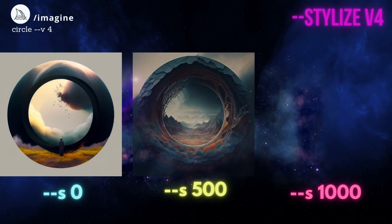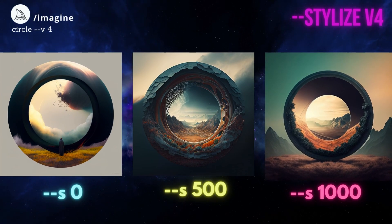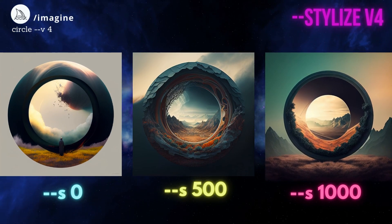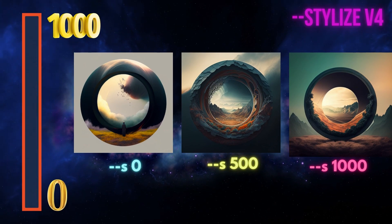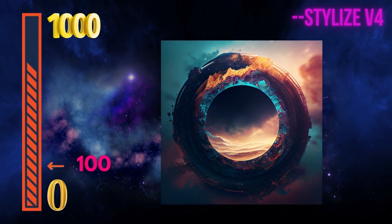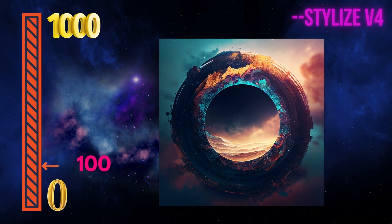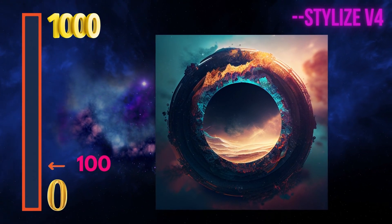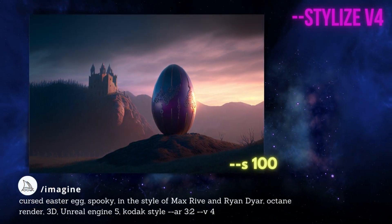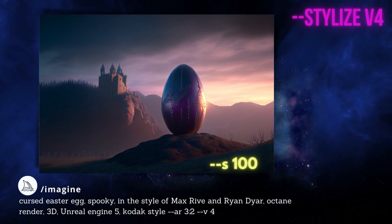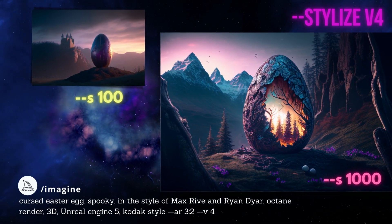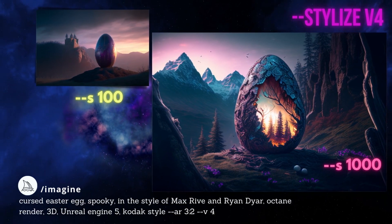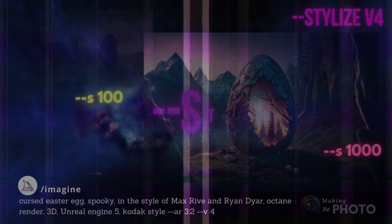In Mid-Journey version 3, the higher stylized numbers usually favored the teal and orange color scheme and Mid-Journey's favorite abstract patterns or mountain scenes. In Mid-Journey version 4, Stylize is both a value of Mid-Journey beauty and a measure of detail, and the changes are a little bit more subtle. The scale has changed to 0 to 1,000 with the default being 100. Lower stylized values tend to be simpler images; at 1,000 you'll get more intricate detail and the images are beautifully stylized. But Mid-Journey version 4 is a little bit more faithful to your prompt.